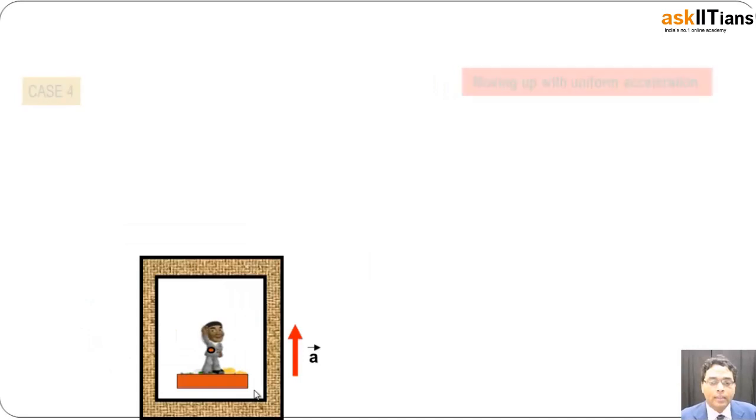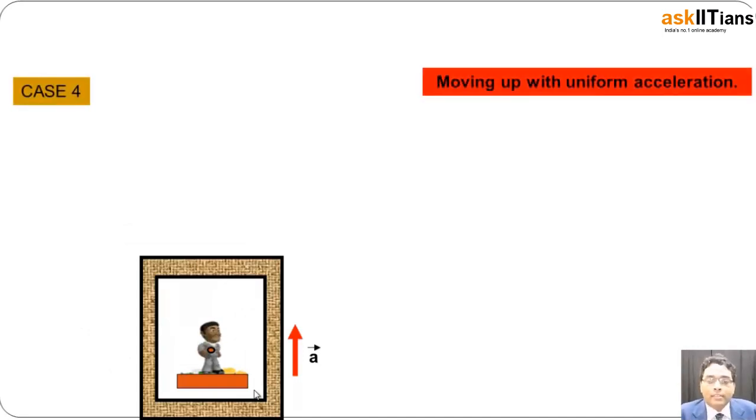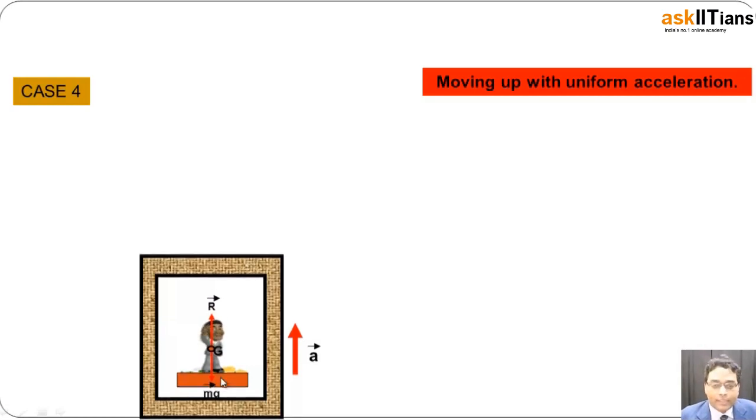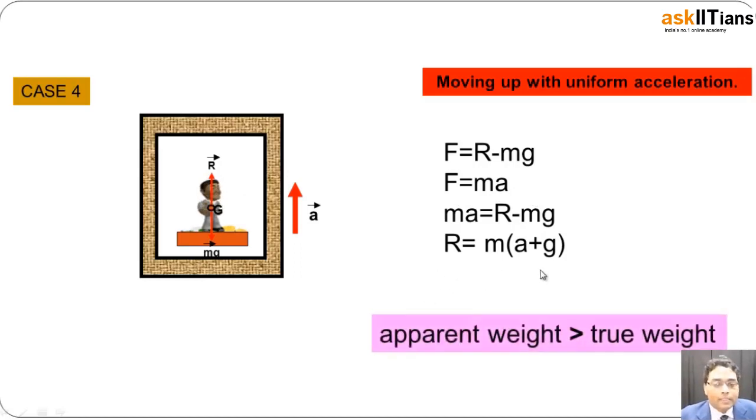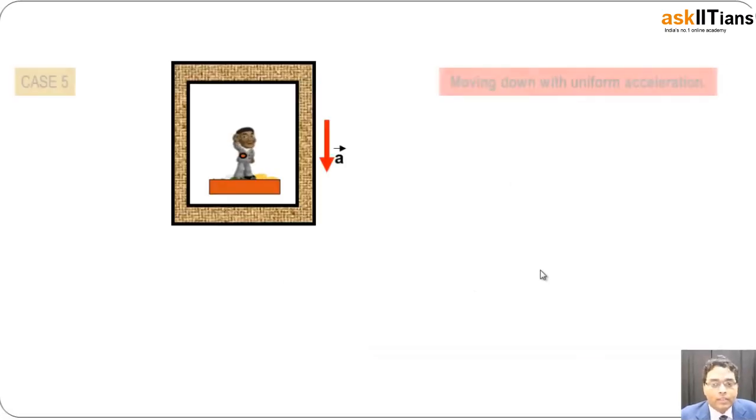equal to true weight. Going further, if I say that the mass is moving up with a uniform acceleration, we will say that there is a pseudo force that will start acting in a downward direction. What will we have? We can say that the net force is going to be R minus mg equals m times a. So the normal reaction will come out to be m times (a plus g). Apparent weight will be more than the true weight.